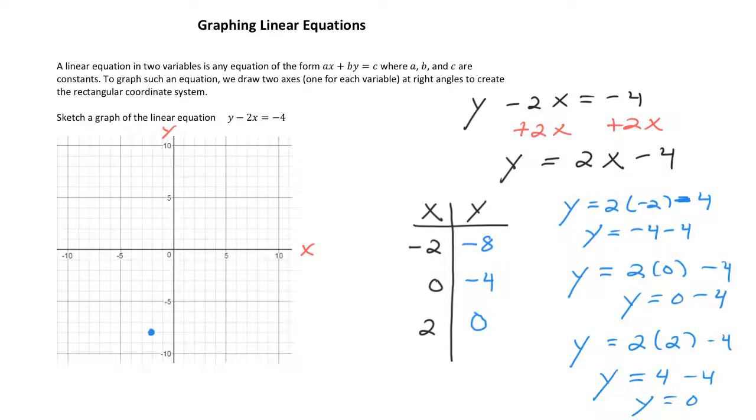Next, I have 0, negative 4. I start at 0, 0. I don't move left or right, because the X value is 0. But I do go down four places to negative 4 for Y. So that's 0, negative 4.